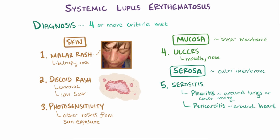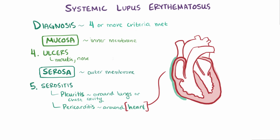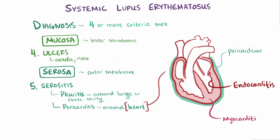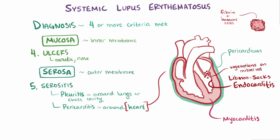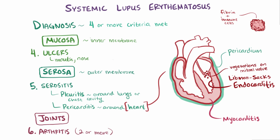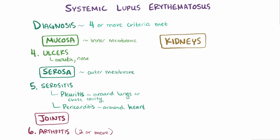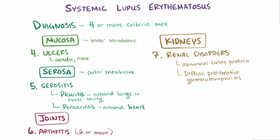Lupus can affect any layer of the heart — in addition to pericarditis, patients may develop endocarditis and myocarditis. Endocarditis presents as Libman-Sachs endocarditis, where vegetations of fibrin and immune cells form around the mitral valve. Joint inflammation causes arthritis (two or more joints needed for criteria). Kidney involvement may cause renal disorders like abnormal urine protein or diffuse proliferative glomerulonephritis. Autoantibodies targeting brain receptors can cause neurological disorders like seizures and psychosis.